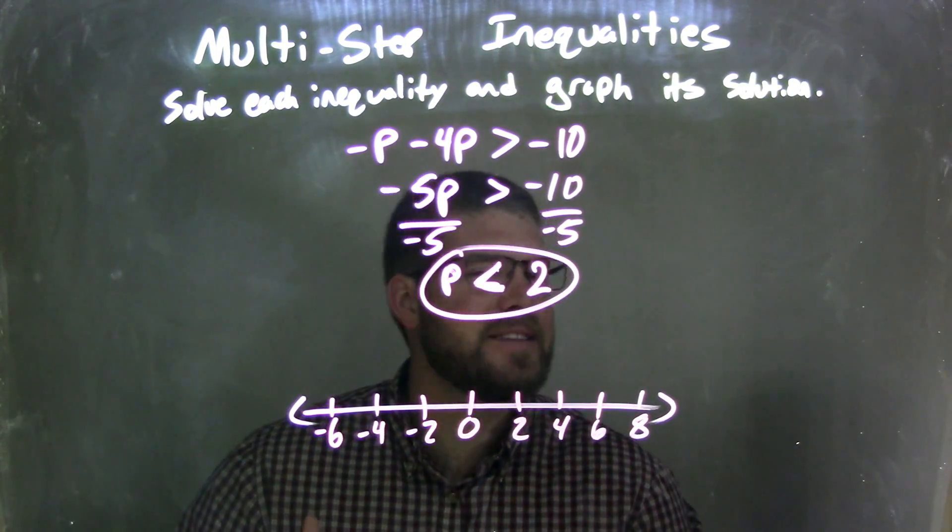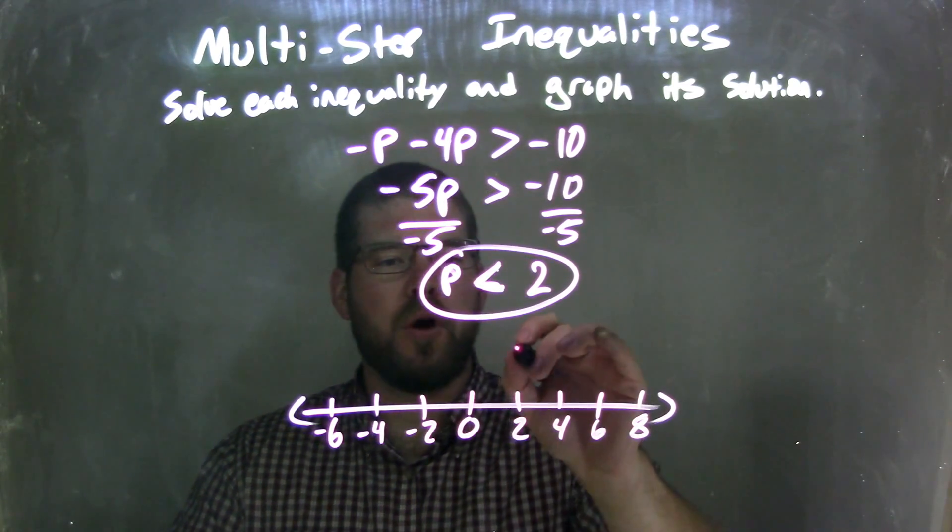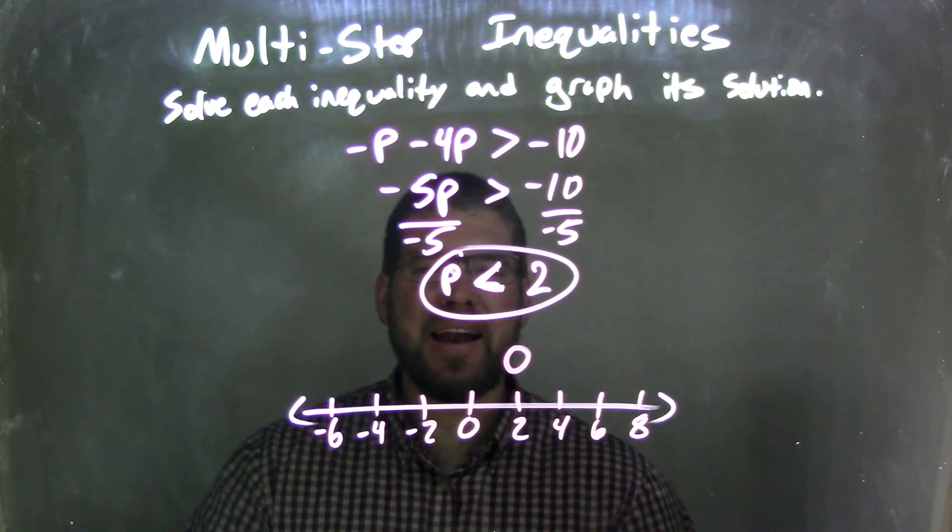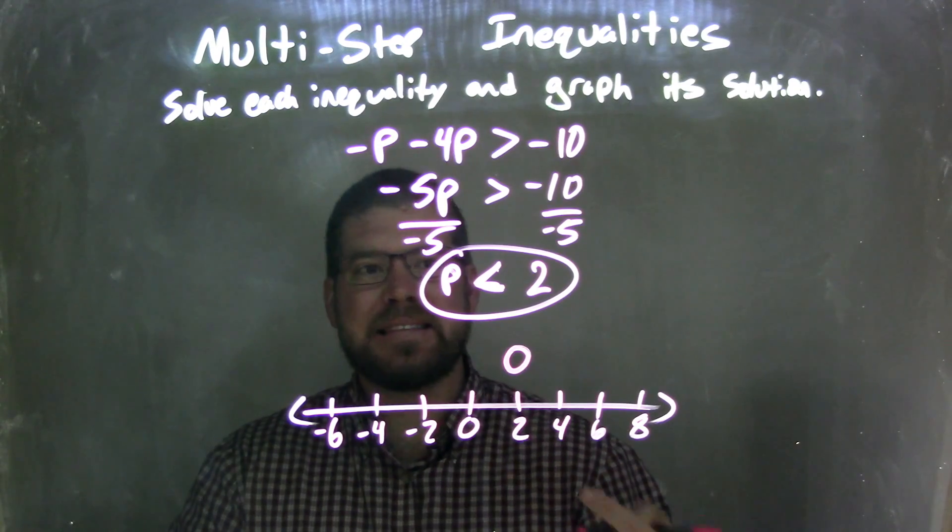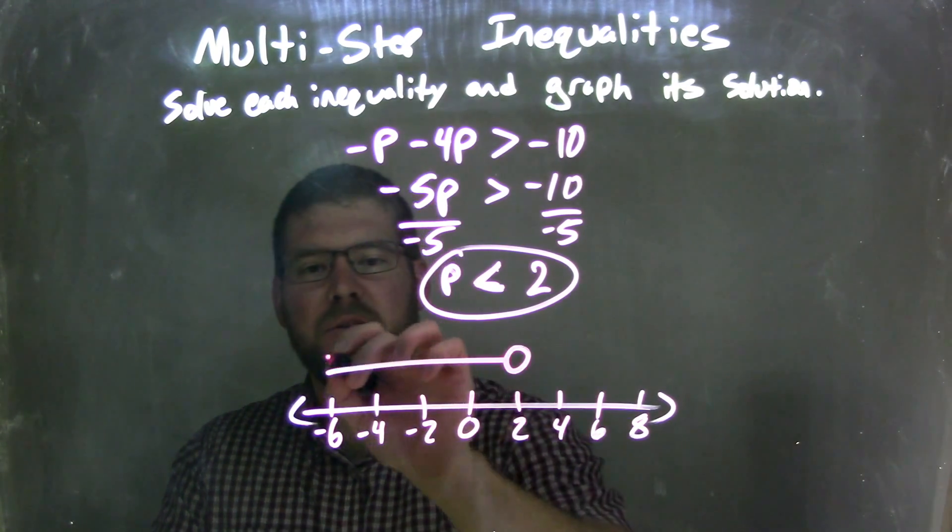Since P is less than 2 and not equal to 2, we put an open circle at 2. Then I shade to the left because P is less than 2.